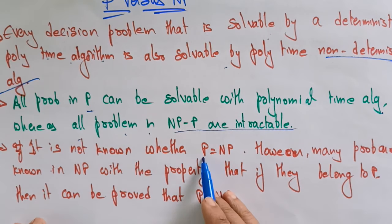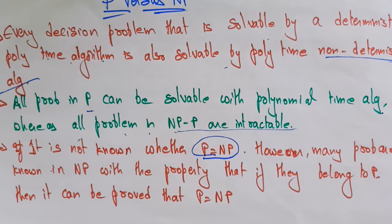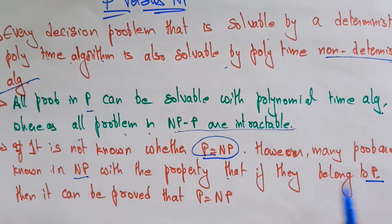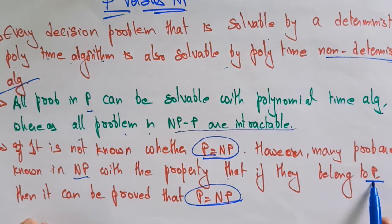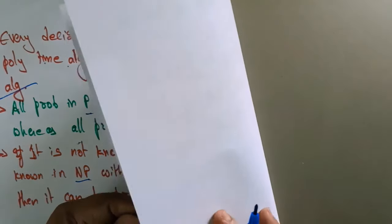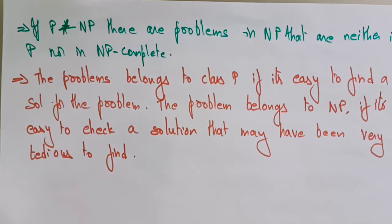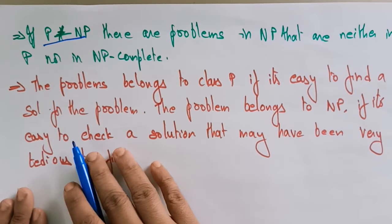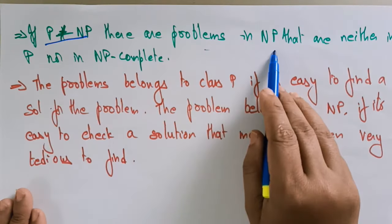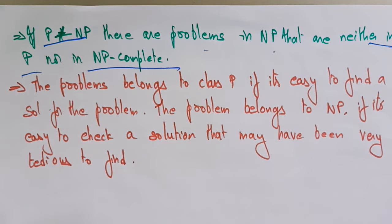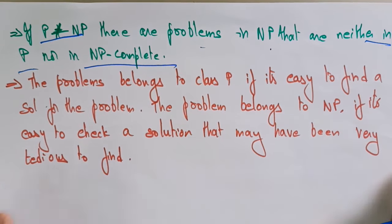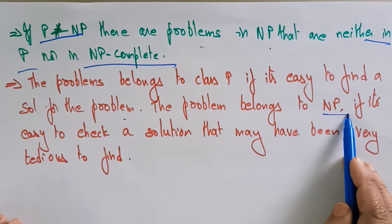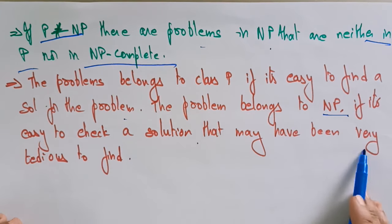It is not known whether P is equal to NP. We don't know whether P always equals NP or not. However, many problems are known in NP with the property that if they belong to P, then it can be proved that P equals NP. If P is not equal to NP, there are problems in NP that are neither in P nor NP-complete. Problems belong to class P if it is easy to find a solution; problems belong to NP if it is easy to check a solution that may have been very tedious to find.